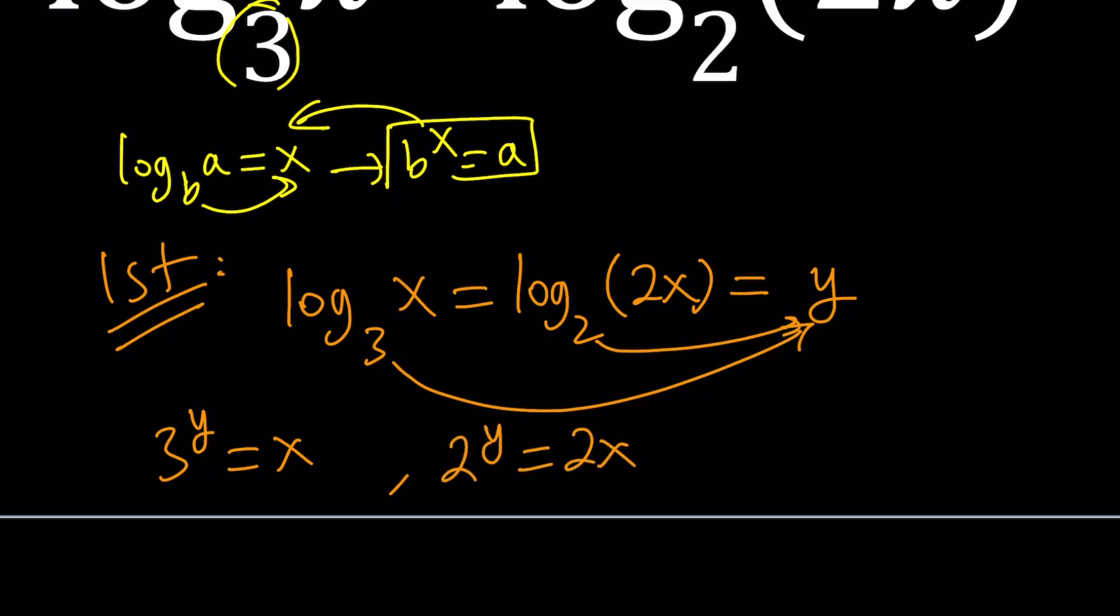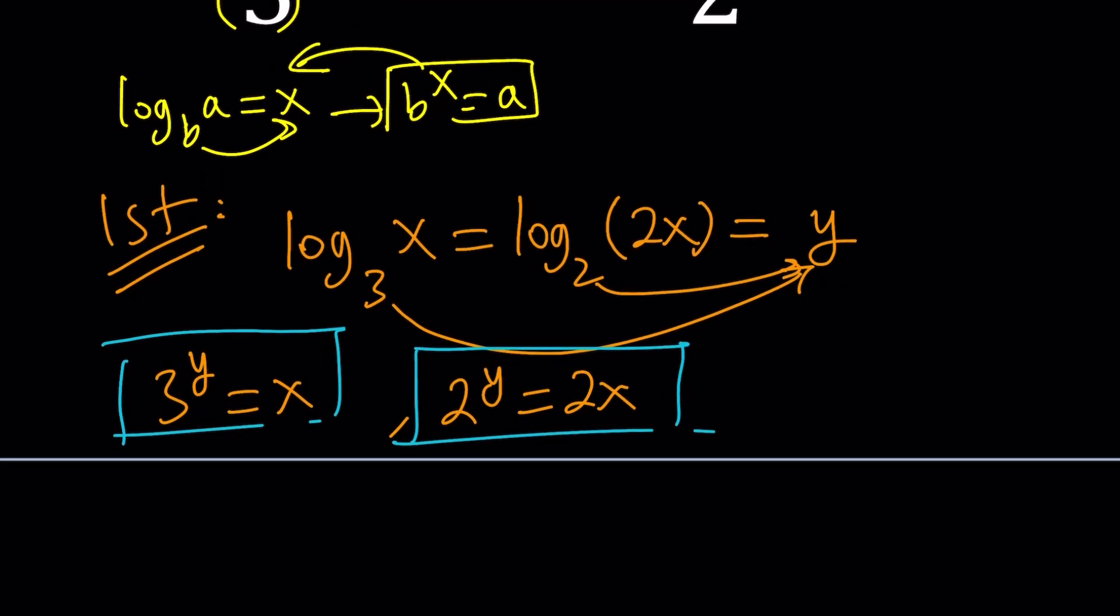We got two equations. They give you different things, but they are related. For example, x and 2x. 2x is 2 times x. Let's relate these together. I can multiply this equation, both sides, by 2. That's going to give me 2 times 3 to the y equals 2x. And since 2x is equal to 2 to the y, then these two are equal. This is what I got so far: 2 to the y equals 2 times 3 to the y.